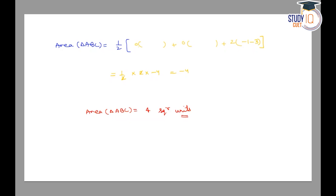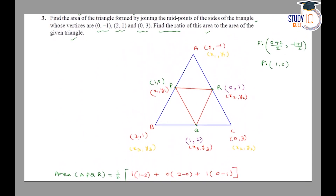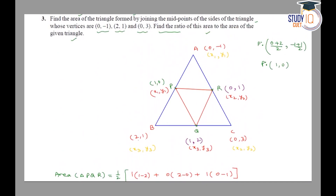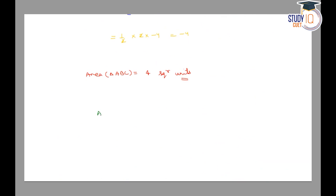Now in the second part, we are asked for the ratio of triangle PQR to triangle ABC. Hence, area of triangle PQR upon area of triangle ABC = 1/4. So this is our answer for part 2.